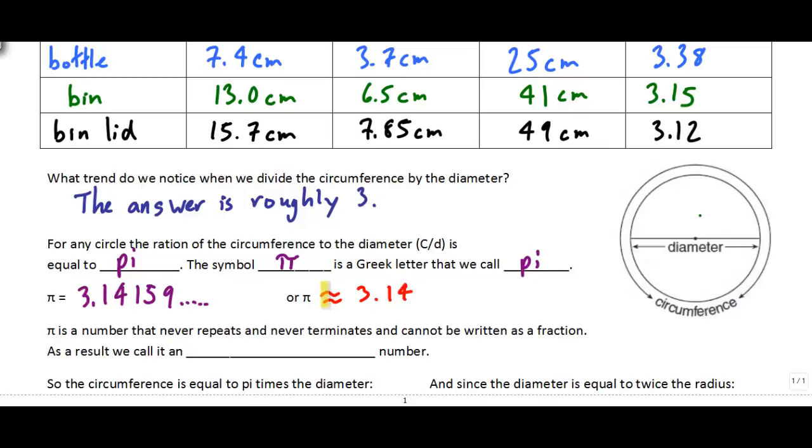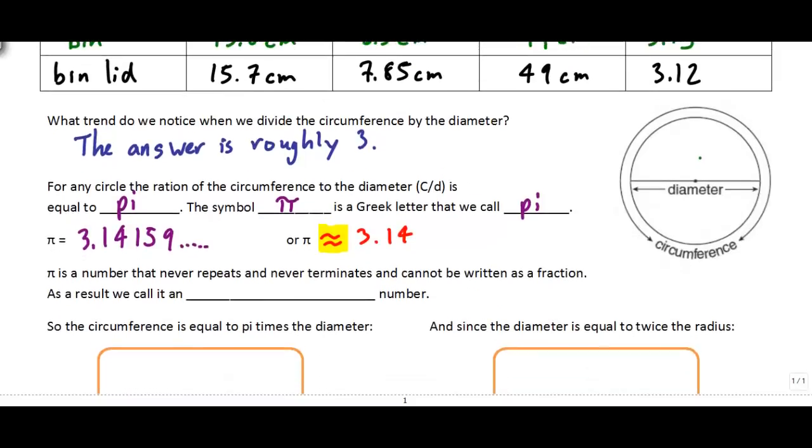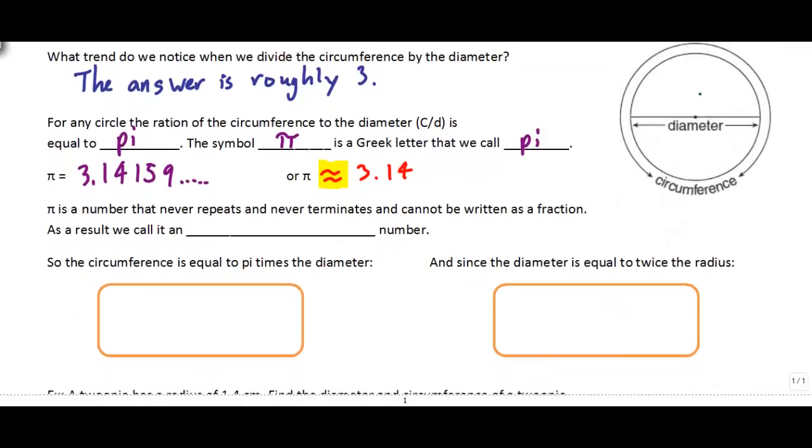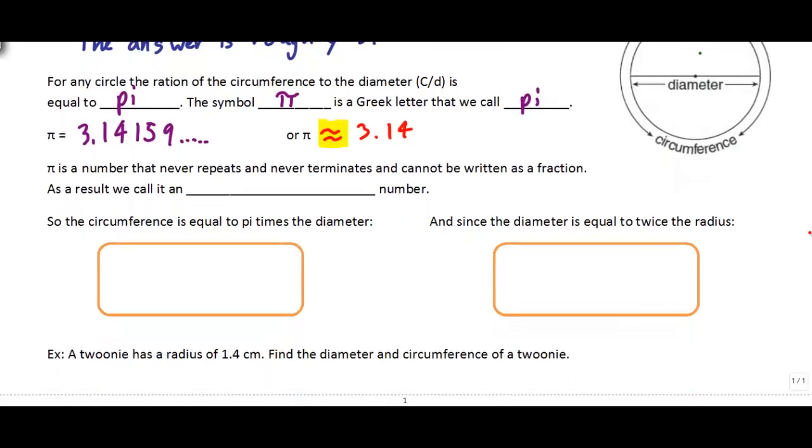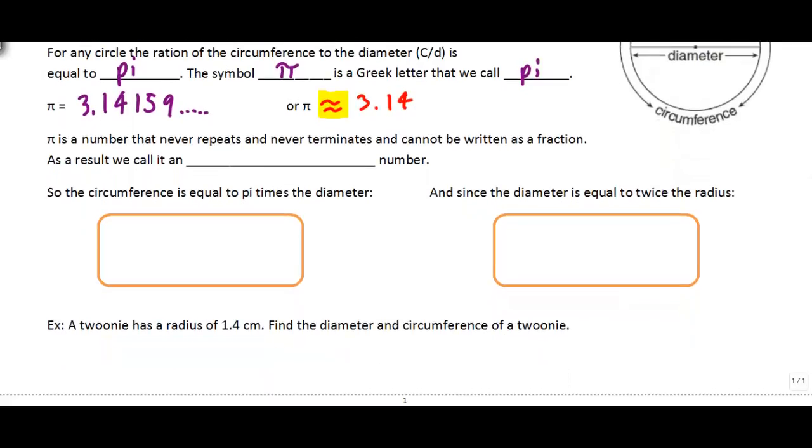And these little squiggly lines you see right here, they look like equal signs but they're a bit wavy. They just mean approximately, like close enough. And so when we talk about pi, we're always going to use pi being 3.14. So pi is a number that goes on forever. It never repeats, and it never terminates, and you can't write it exactly as a fraction. And so a number like that, we call that an irrational number. There's a few examples of those, but probably the most famous would be pi.